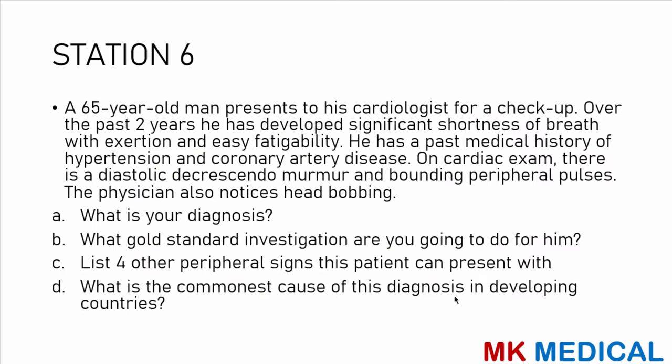Station 6: a 65-year-old man presents to his cardiologist for checkup. Over the past two years he has developed significant shortness of breath with exertion and easy fatigability. He has a past medical history of hypertension and coronary artery disease. On cardiac exam there is a diastolic decrescendo murmur and bounding peripheral pulses. The physician also notes head bobbing. What is your diagnosis? What gold standard investigation will you do? List four other peripheral signs this patient can present with. What is the commonest cause of this diagnosis in developing countries?